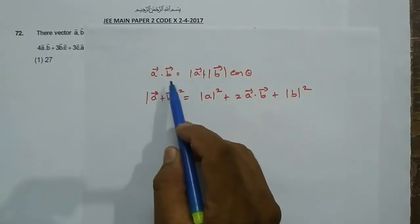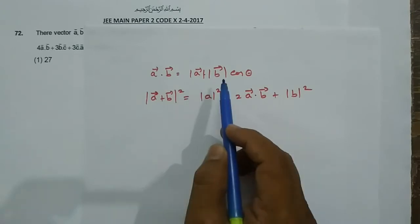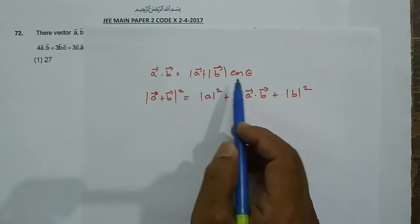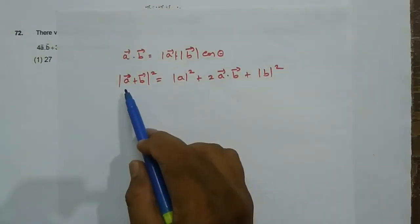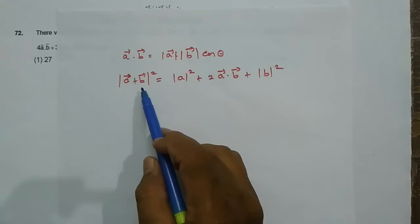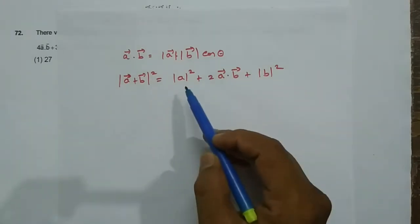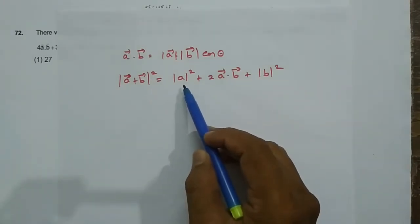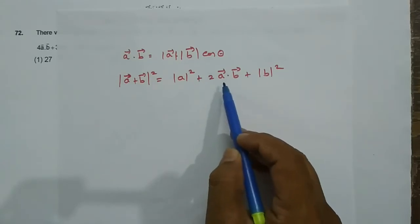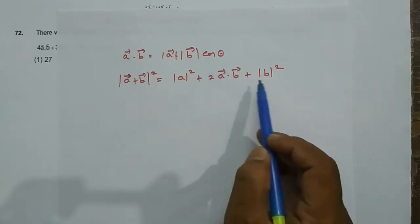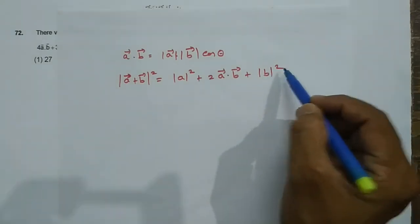A vector dot B vector is equal to modulus of A vector times modulus of B vector times cos theta, equal to 1. So, modulus of A vector plus B vector whole squared equals modulus of A vector squared plus 2A·B plus modulus of B vector squared.